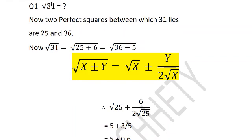So √31 can be written as √25 (that is the smaller square number) plus 6. Also if you want to write, you can write it in the form of √36 minus 5.